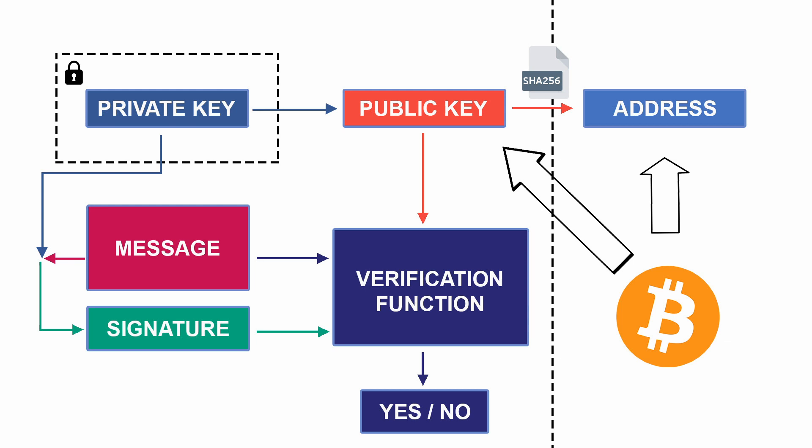So why are we protecting the public key from frequent exposure if it is meant to be public? The answer is in the diagram. The public key is used to verify the signature signed by the sender, and we know the private key generates the public key using an elliptic curve function. Till now there is no way of generating a private key from the public key, but our world is full of geniuses — maybe one day someone finds that way. In that case, they could easily access your private key, so it is better to expose your public key less.